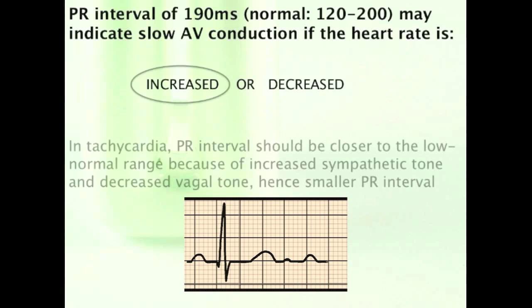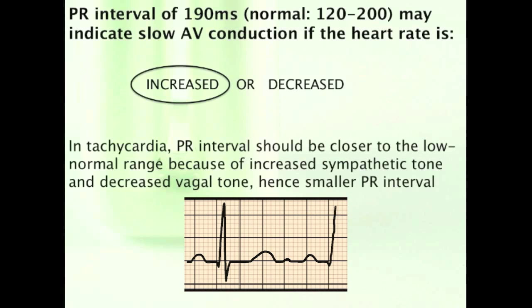Increased. So first of all, can you tell me the normal range for PR interval? Right, 120 to 200 milliseconds. If a patient is tachycardic, you would expect the PR interval to be closer to the low normal range. And why is that?